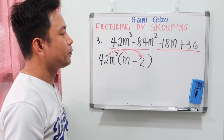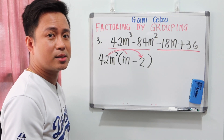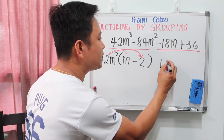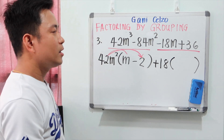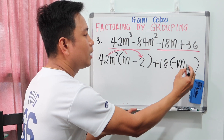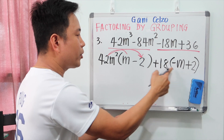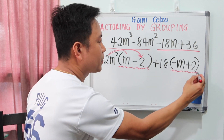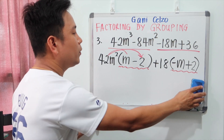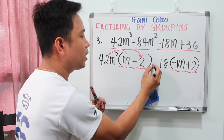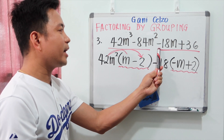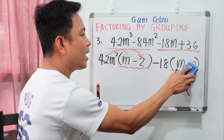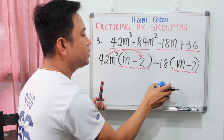For the second group, negative 18m plus 36, be careful with the sign. The GCF might seem to be 18, but if we factor out positive 18 we'd get negative m plus 2 inside, which does not match the first group. So instead we factor out negative 18. That way, inside the parentheses we get m minus 2, which now matches the first group exactly. Your goal is to make both parentheses exactly the same.